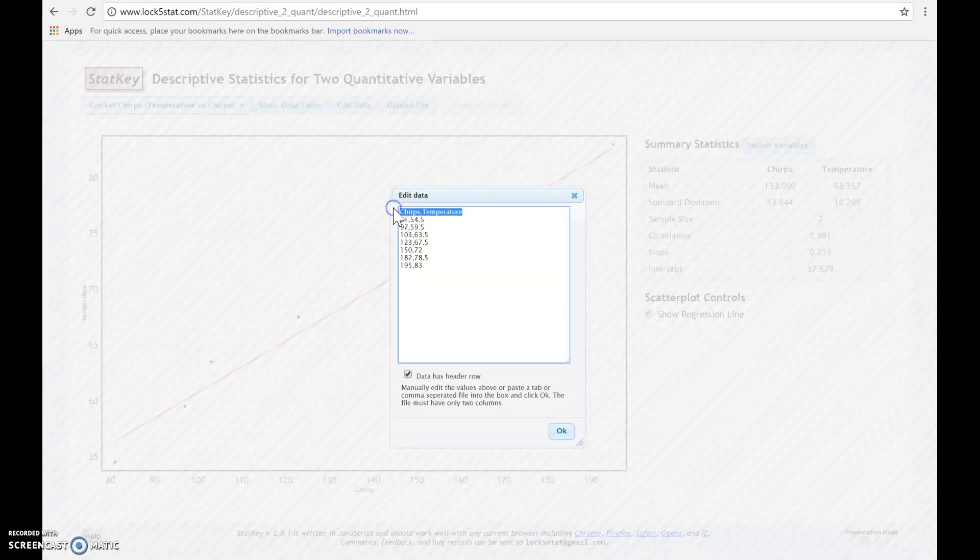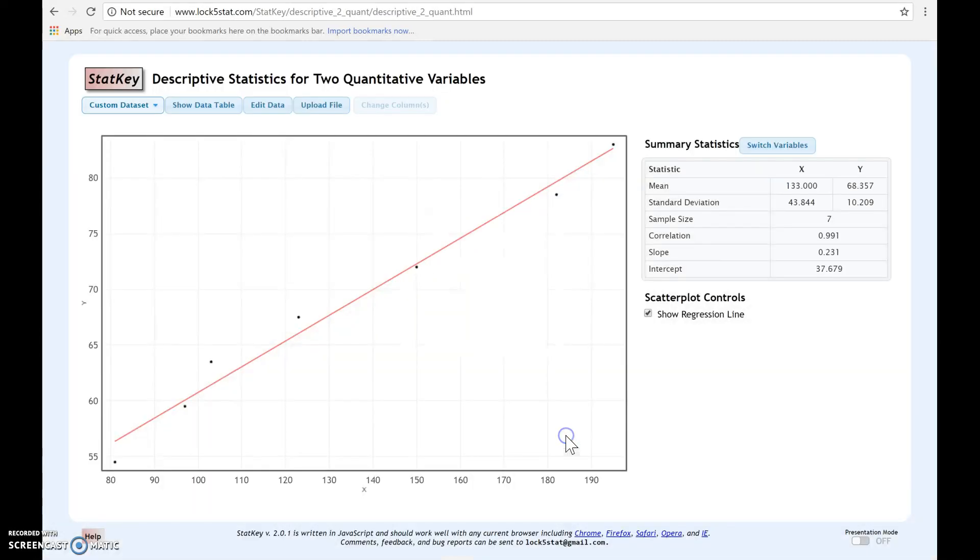Now we could leave off the chirps and temperature, and that would be fine. But if you do that, you have to make sure you unclick data has header row. And notice if we click OK, nothing here has changed.